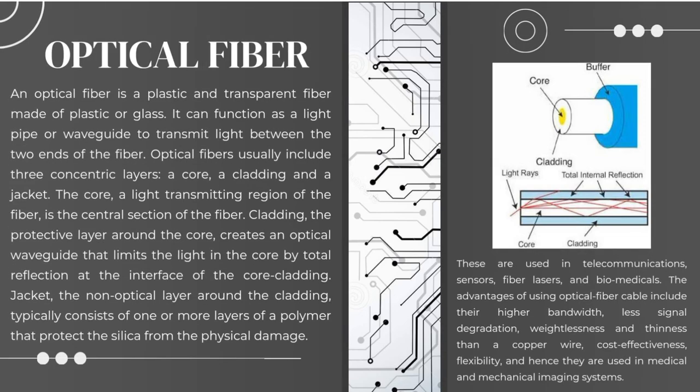Optical Fiber. An optical fiber is a transparent fiber made of plastic or glass that can function as a light pipe or waveguide to transmit light between the two ends of the fiber. Optical fibers usually include three concentric layers: a core, a cladding, and a jacket. The core is the light-transmitting central section. The cladding creates an optical waveguide that limits the light in the core by total internal reflection at the core-cladding interface. The jacket, a non-optical layer around the cladding, consists of polymer layers that protect the silica from physical damage. These are used in telecommunications, sensors, fiber lasers, and biomedicals. Advantages include higher bandwidth, less signal degradation, and they are lighter and thinner than copper wire.